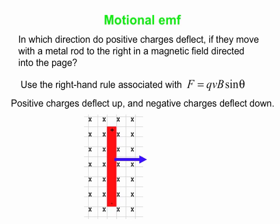So this tells us the positive charges deflect up, negative charges deflect down. And what you get is, eventually an equilibrium will be reached because when you have positives at the top and negatives at the bottom, you will have an electric field built up in the rod that will act to counteract this magnetic force.